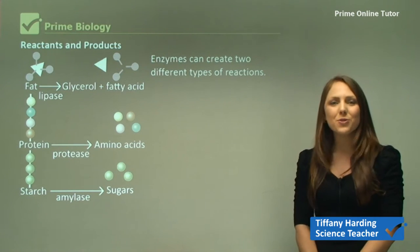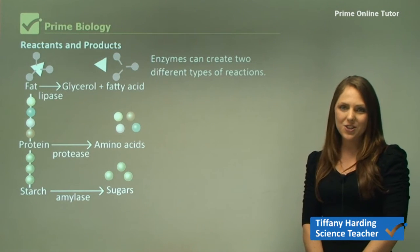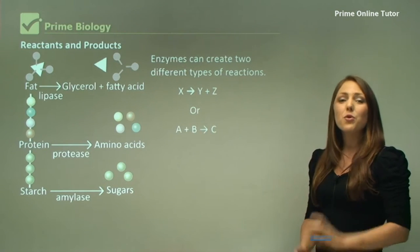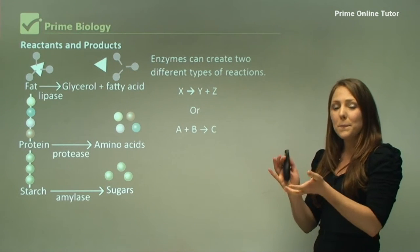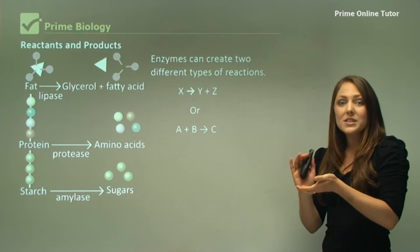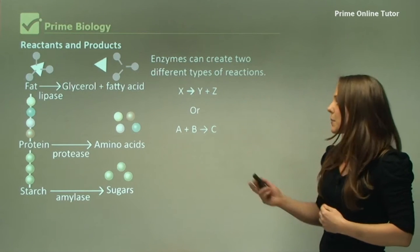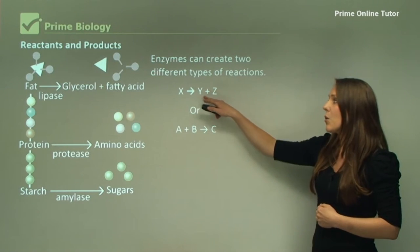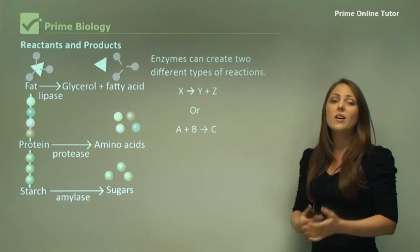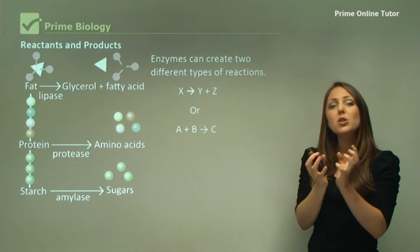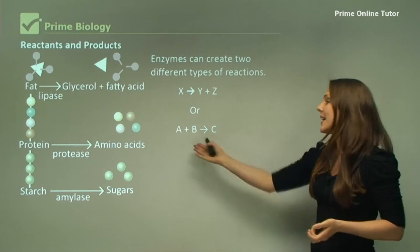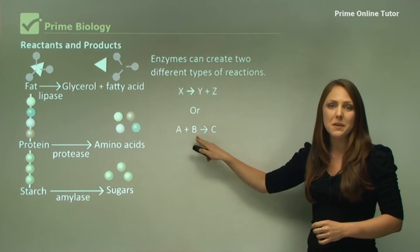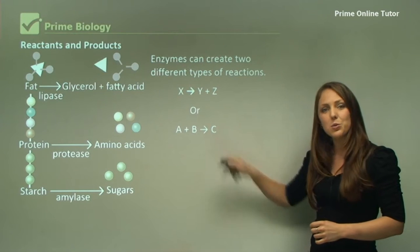Enzymes can create two different types of reactions, which is quite special. They can make two smaller substances from one big substance — for example, X can make Y and Z — or from two smaller molecules they can actually make a larger molecule, like A plus B can equal C.